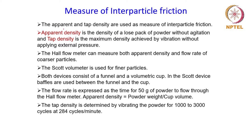There are two parameters with regard to the powder when it is filled in any container: one is the apparent density and the other is the tap density. These two quantities are kind of a measure of interparticle friction. Let us first understand what apparent and tap density are, and then we will see how they can be measured and how an idea about interparticle friction can be obtained from them.